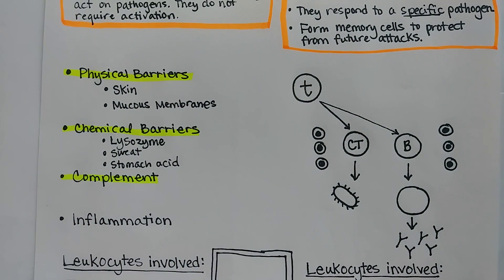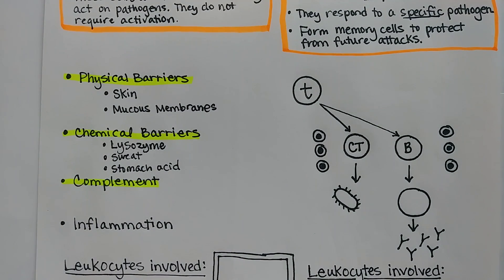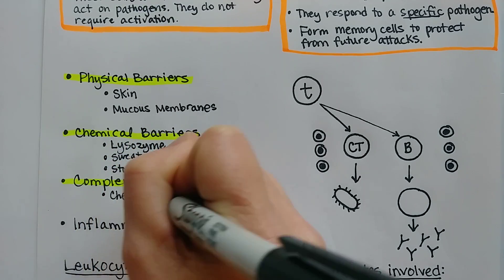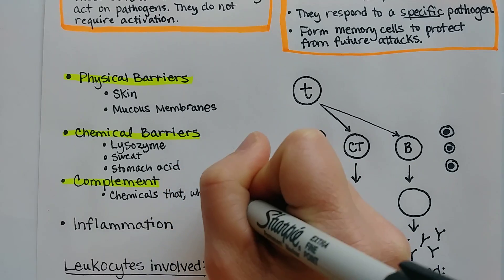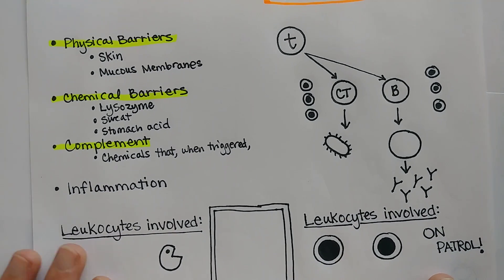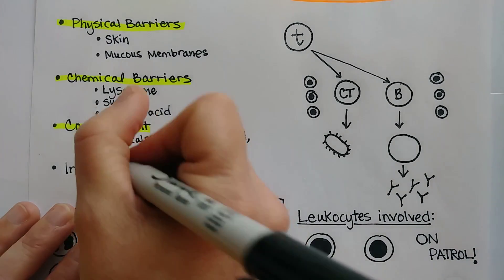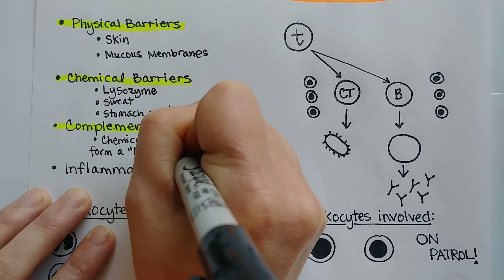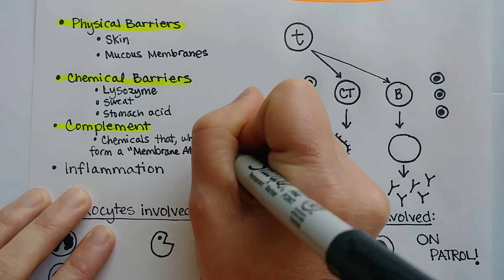Complement is a group of chemicals that are always circulating in your blood. When they encounter a pathogen or are triggered by another white blood cell, they bind together to form a complex called a membrane attack complex, and they punch holes in cell membranes.